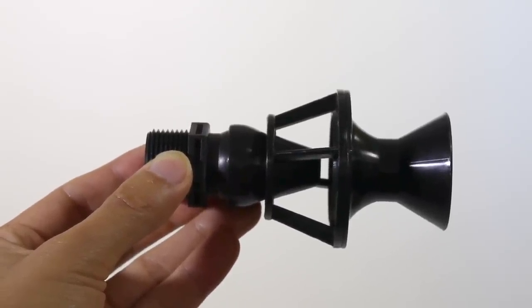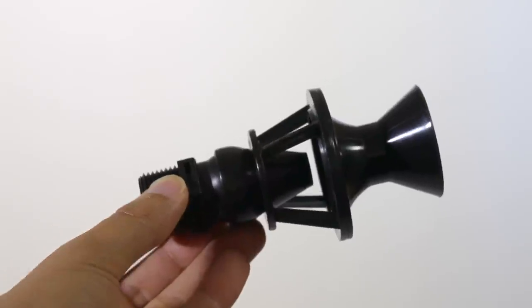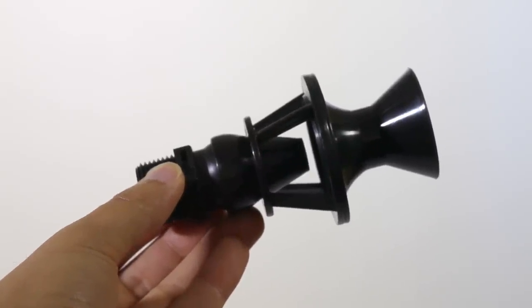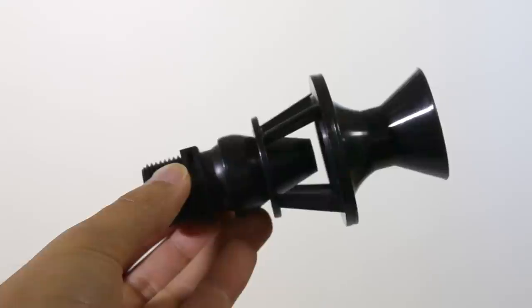Someone asked if they could simply remove the funnel portion and attach it to a regular lockline fitting and I'm honestly not that sure. I think it would be possible but I didn't have a lockline tool handy to try it out.